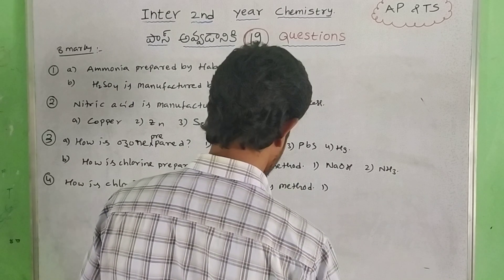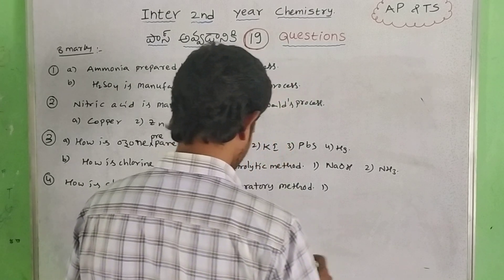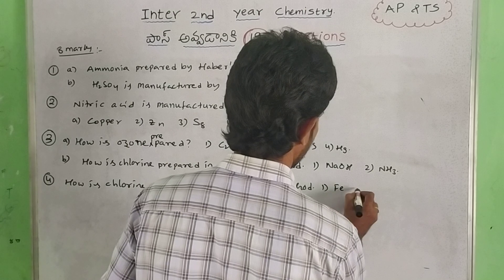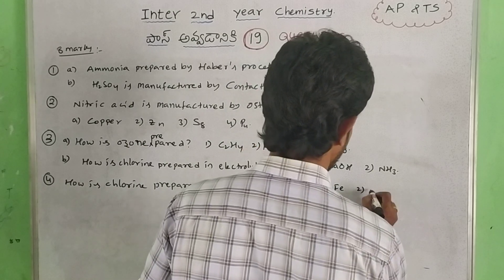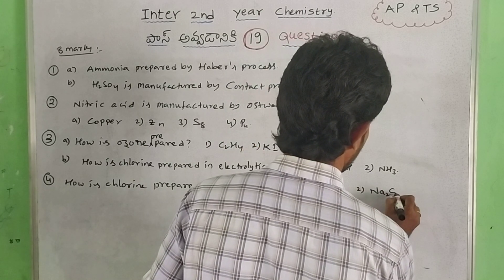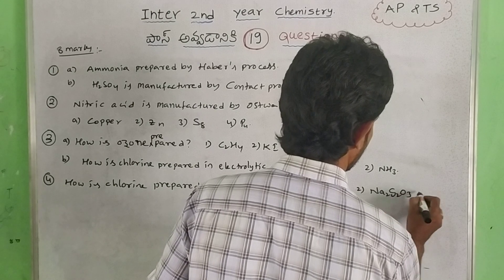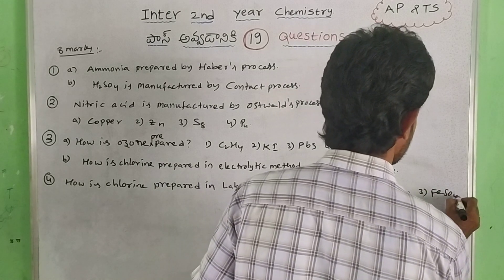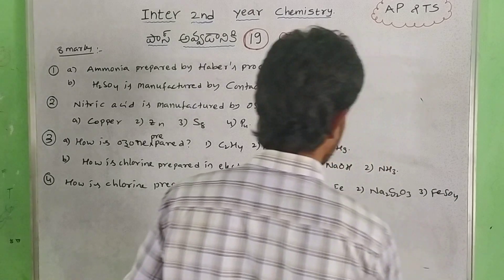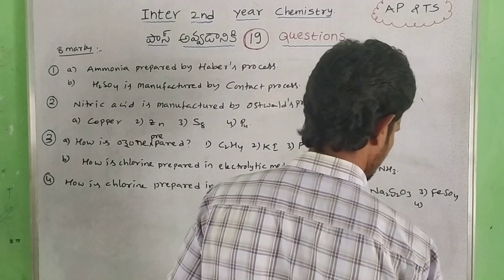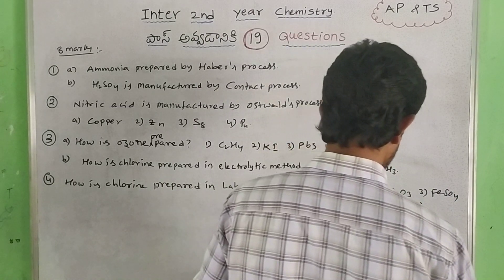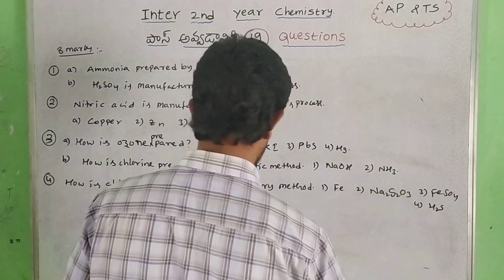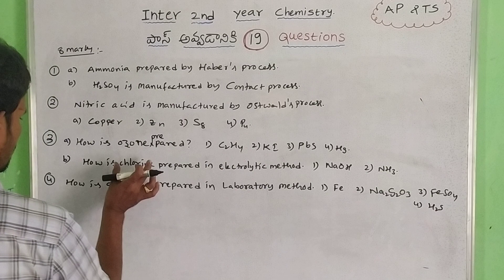Properties of chlorine: first one — NaOH (cold and hot). Second one — iron (Fe). Third one — hypo (Na2S2O3). Fourth one — Fe (ferrous sulfide). Next, H2S — two to four properties.